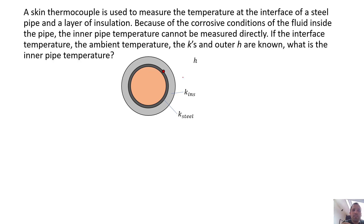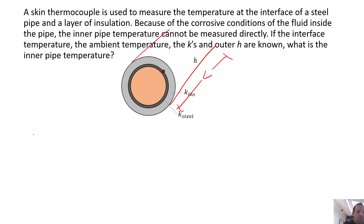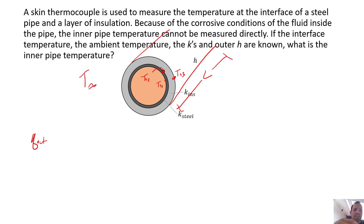First, let's assume a certain length of the pipe — let's call that L. Because we're just asked for this intermediate temperature, we're hoping that L will cancel out eventually, so we'll assume some length; we can just say that's one meter. We know this interface temperature — let's call that TS2. We do not know this temperature — let's call that TS1. The outer insulation temperature, let's call that TS3. And finally we would have T∞, the ambient temperature.